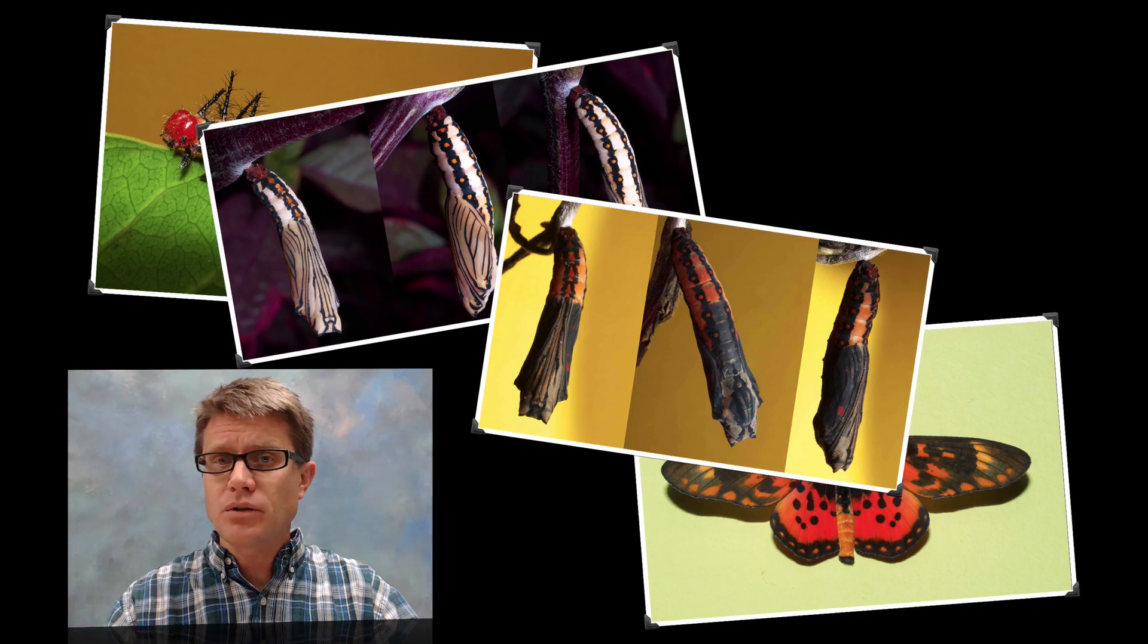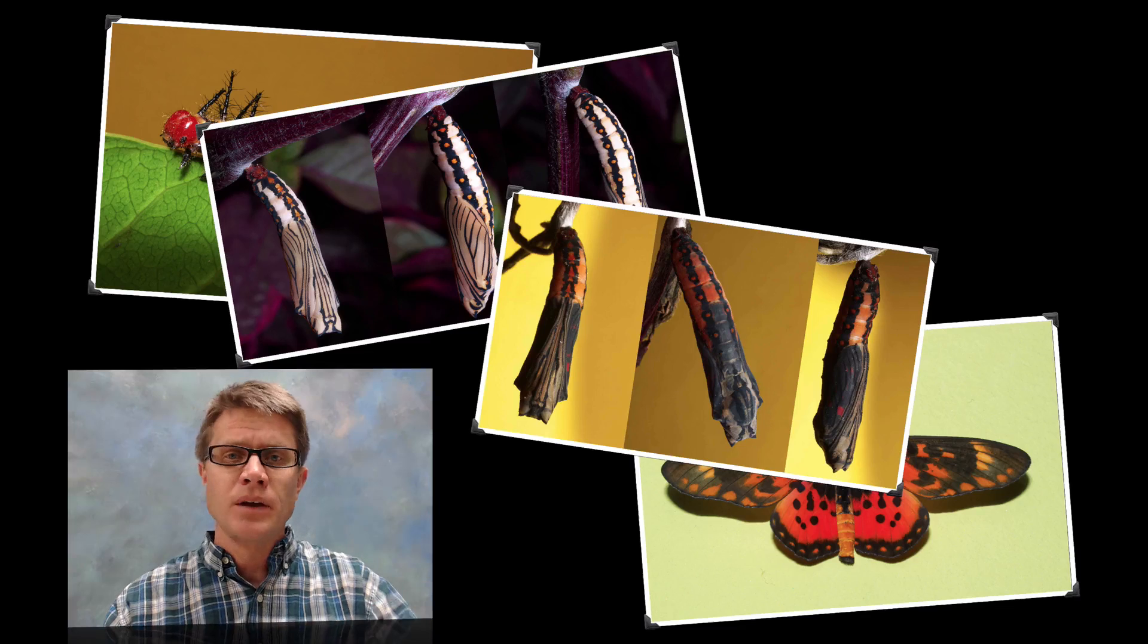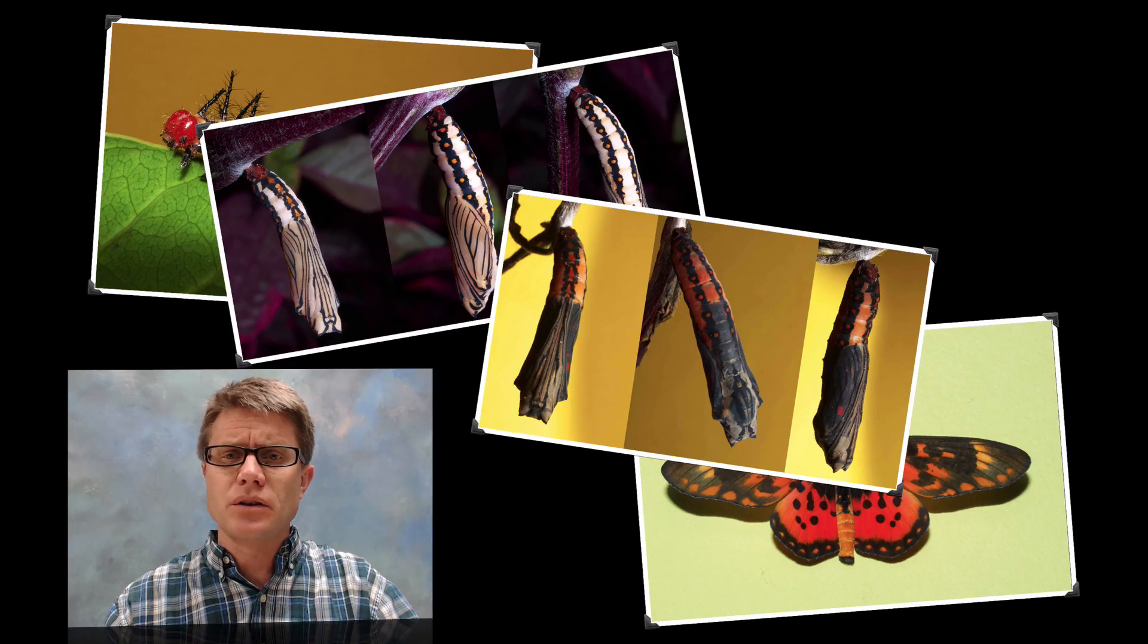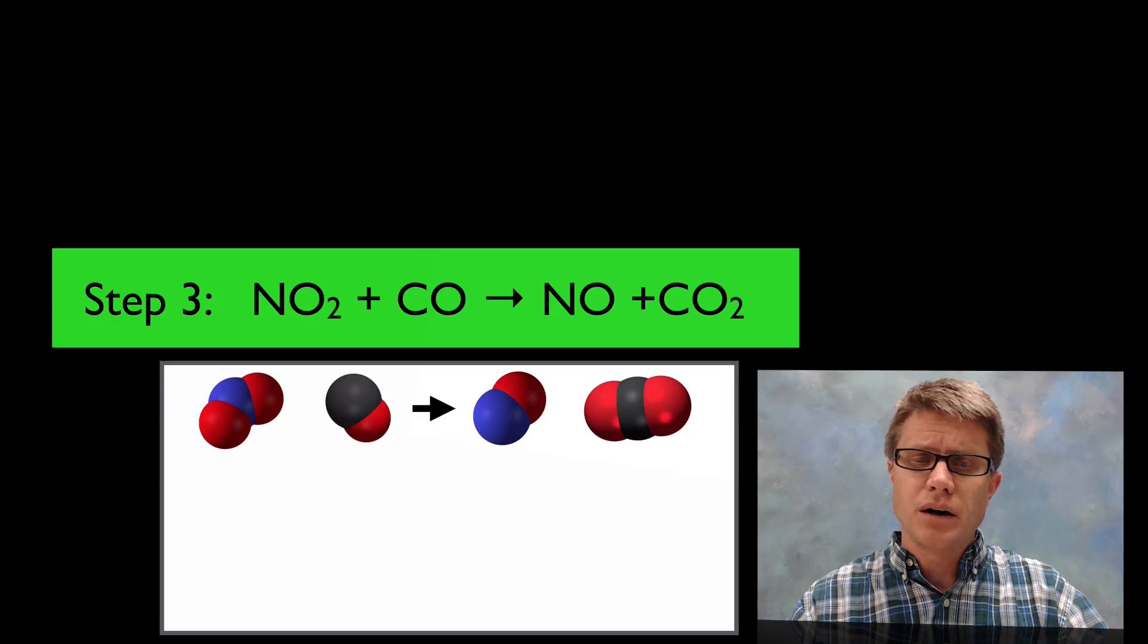But we don't really get to see what's going on. In other words, the formation of that chrysalis we don't get to see, and all that metamorphosis going on we don't get to see that. And so chemical reactions are essentially the same way, and so we have to use experimentation to figure out what's going on.